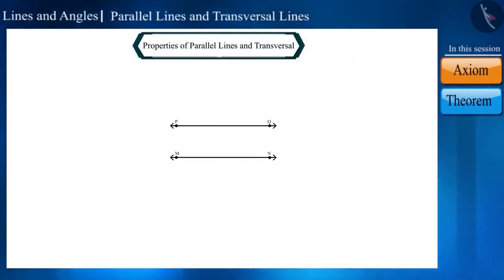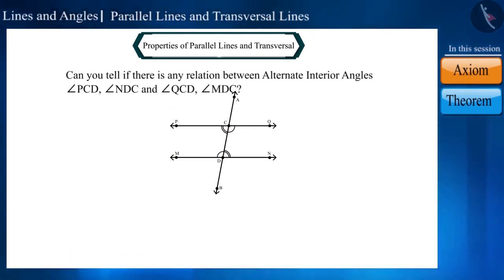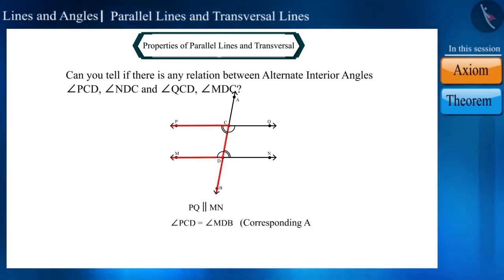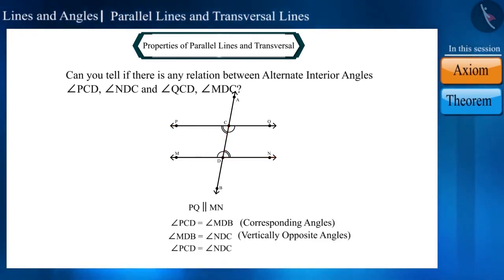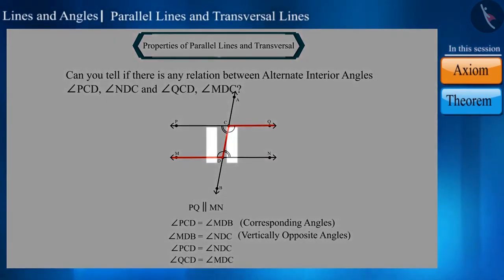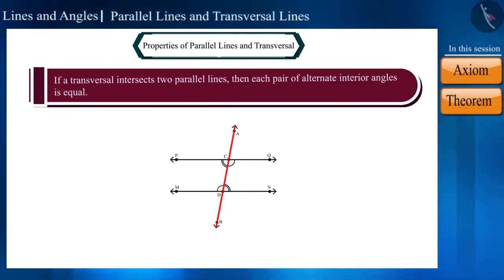Can you tell if there is any relation between alternate interior angles formed by the intersection of two parallel lines by a transversal? We have been given that the lines are parallel. Angle PCD and angle MDB are corresponding angles, so they will be equal. And angle MDB and angle NDC are also equal as they are vertically opposite angles. From this, we can conclude that angle PCD and angle NDC will also be equal. Similarly, we can also prove that angle QCD and angle MDC are equal to each other. Why don't you pause the video and try to prove it? We can write our result as a theorem: if a transversal intersects two parallel lines, then each pair of alternate interior angles is equal.